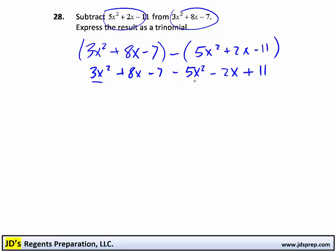3x squared minus 5x squared is minus 2x squared. 8x and minus 2x is plus 6x. And then minus 7 and plus 11 is plus 4.